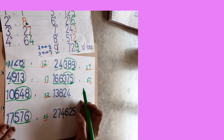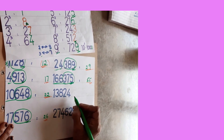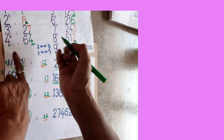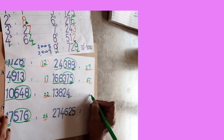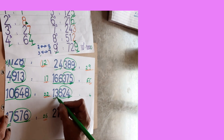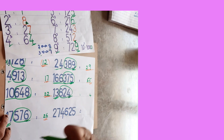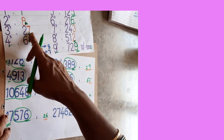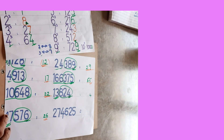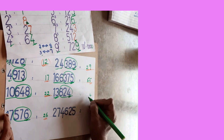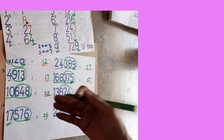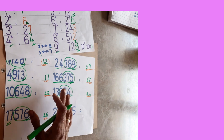Next: 13824 — units place is 4, same digit, write 4. Eliminate 3 digits — remaining is 13. 2 cube is 8 (less), 3 cube is 27 (more). Take the lesser: 2. Answer is 24. Check: 24 × 24 × 24 = 13824. Like that, any number in any exam — just remember that concept and you can do it easily.